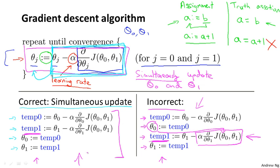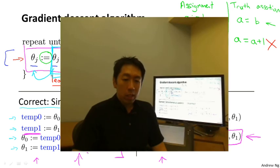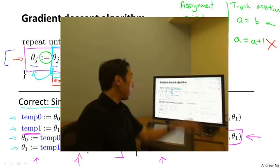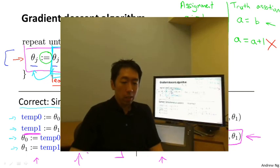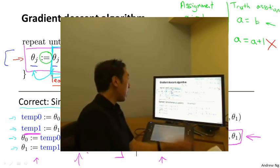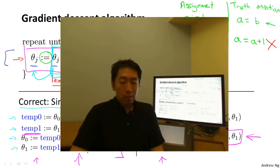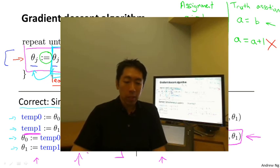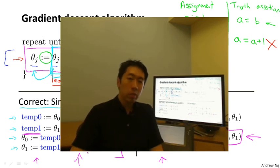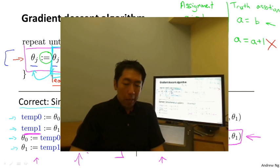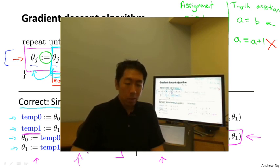So that's the outline of the gradient descent algorithm. In the next video, we're going to go into the details of the derivative term, which I wrote out but didn't fully define. If you've taken a calculus class and are familiar with partial derivatives, that's exactly what that term is. But even if you haven't seen calculus or partial derivatives before, don't worry — the next video will give you all the intuitions and everything you need to know to compute that derivative term and apply gradient descent.